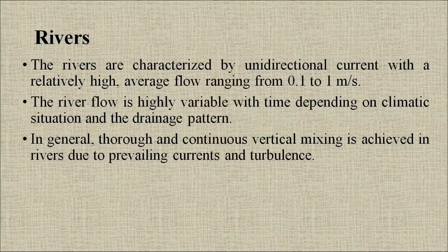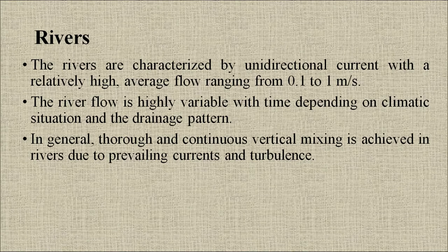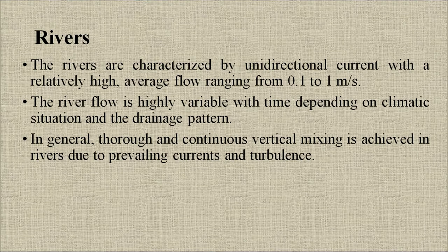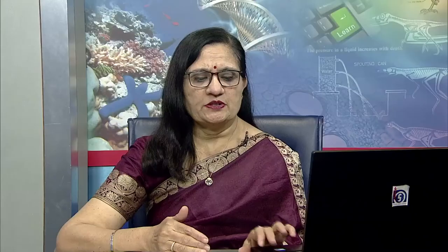Rivers are characterized by unidirectional current with a relatively high average flow ranging from 0.1 to 1 meter per second. The river flow is highly variable with time depending on climatic situation and the drainage pattern. In general, thorough and continuous vertical mixing is achieved in rivers due to prevailing currents and turbulence.